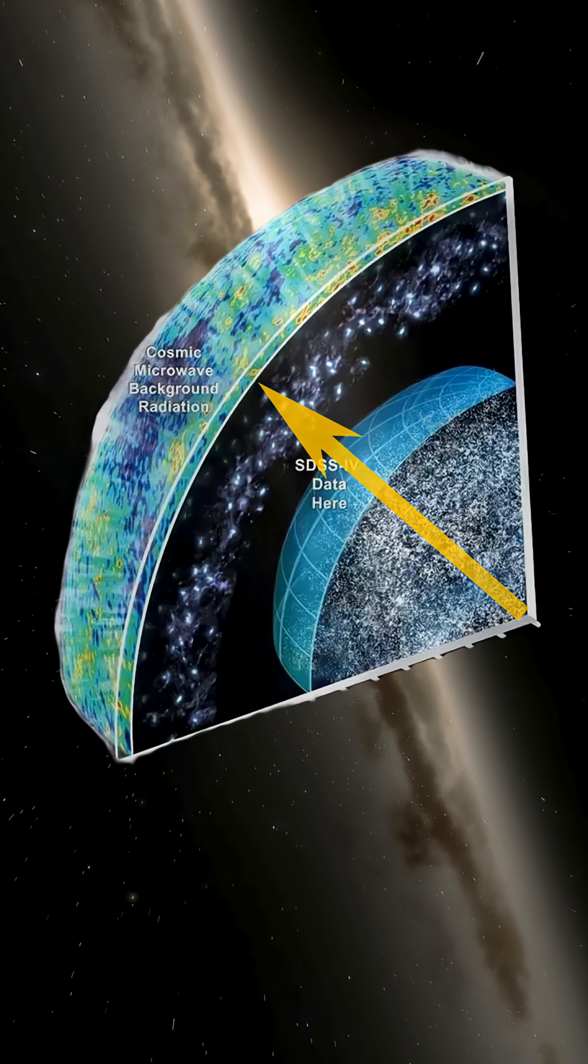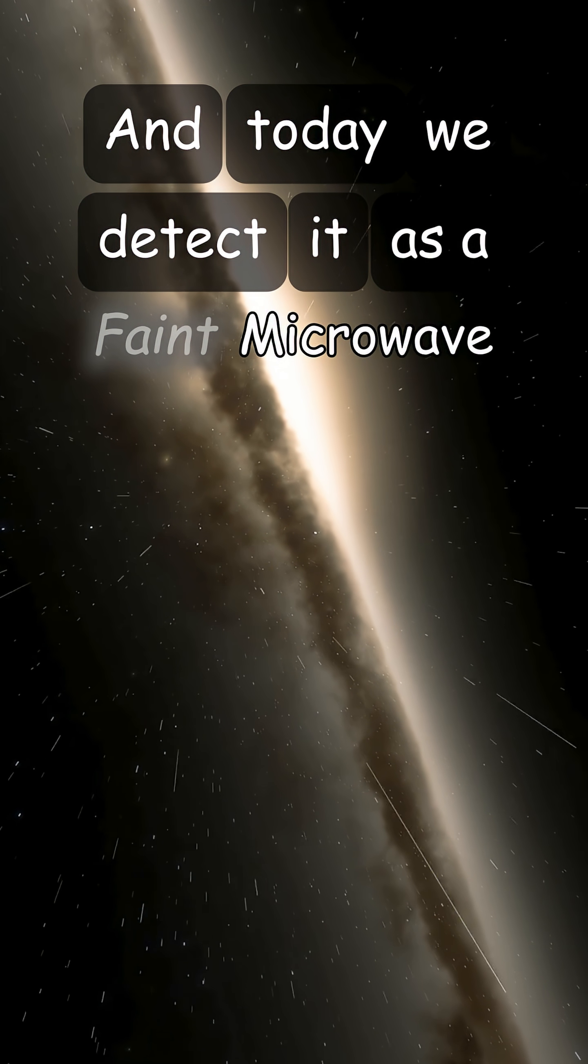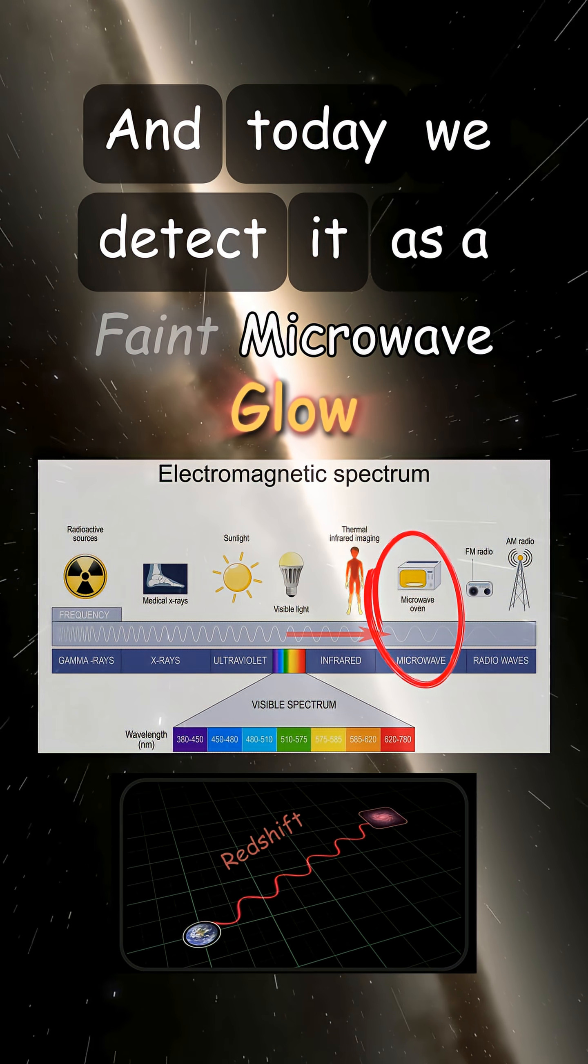That ancient light has been traveling through space for 13.8 billion years, and today we detect it as a faint microwave glow due to its extreme redshift.